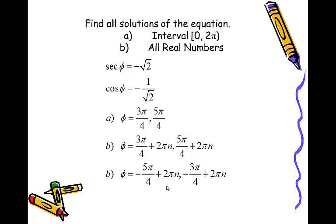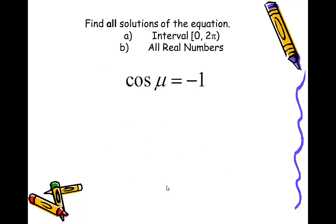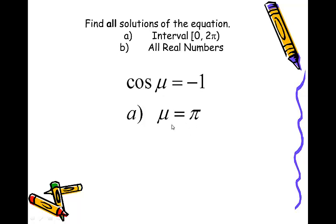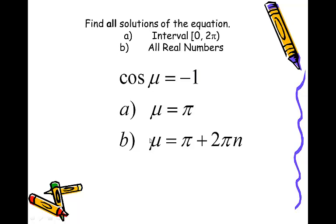Cosecant u equals negative 1 — these are a little unique because we're on the quadrantals. That happens only at pi, and then you have to go all the way around the circle to see it again, because cosine has a period of 2 pi. So pi plus 2 pi n represents all possible angles whose cosine is negative 1. Normally with sine and cosine you have two parts to your answer, but here we only have one part because this only happens once between 0 and 2 pi.